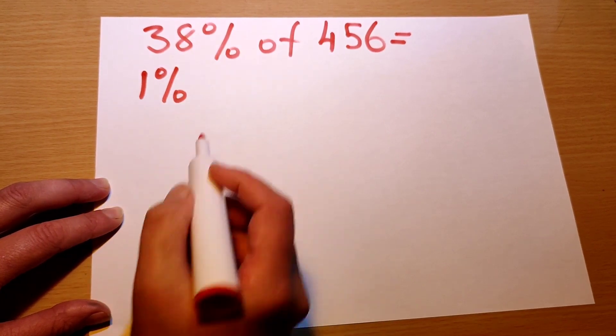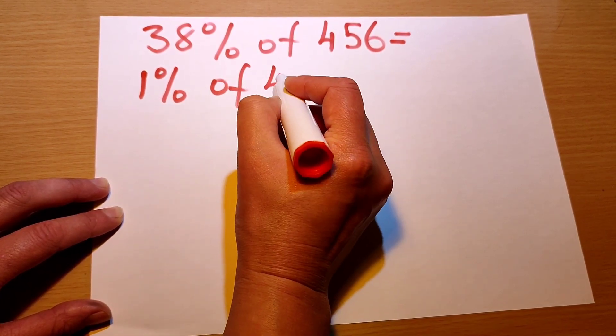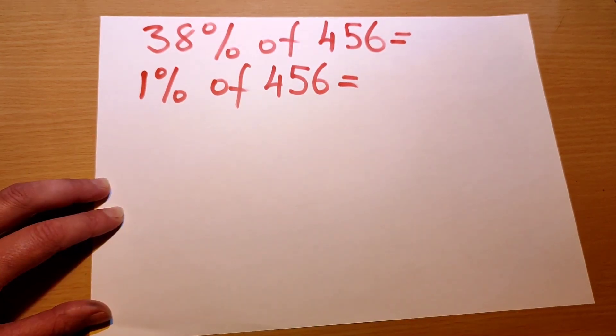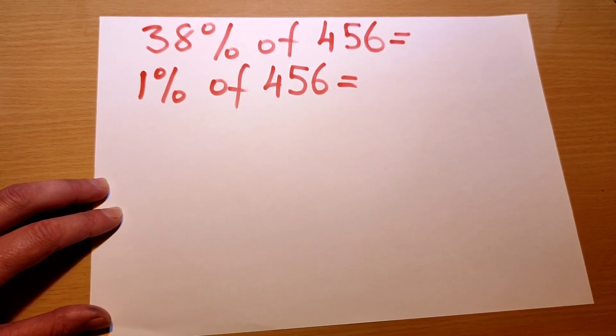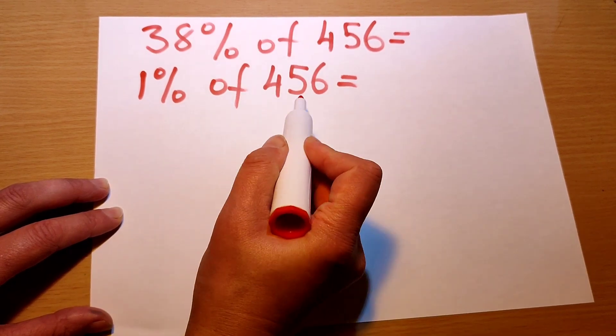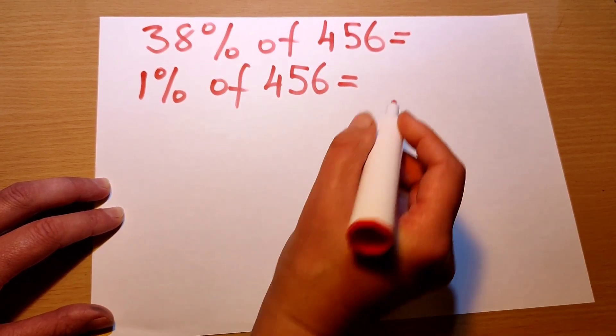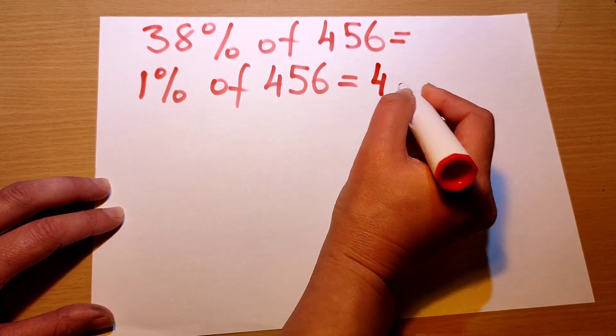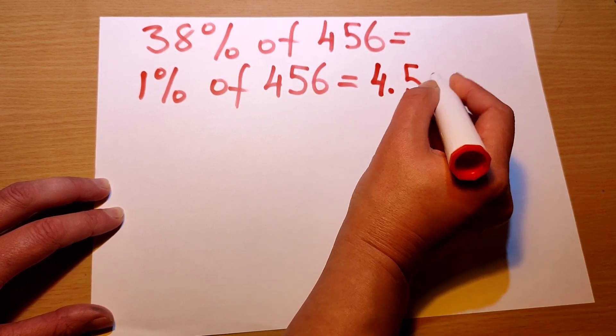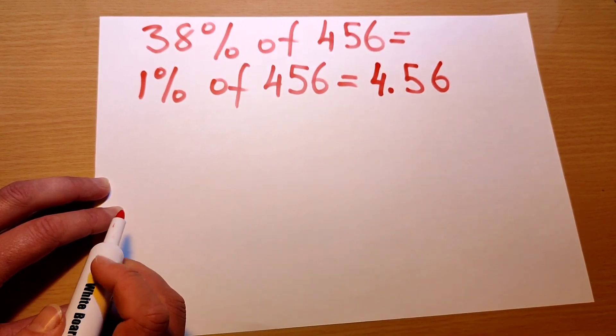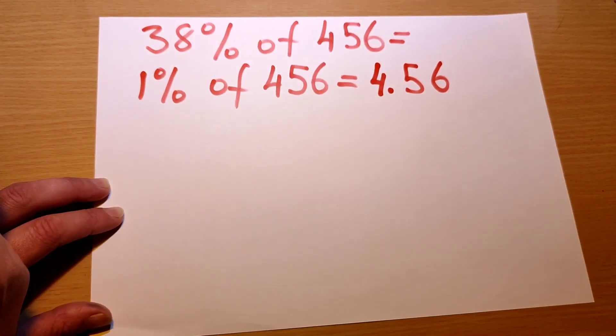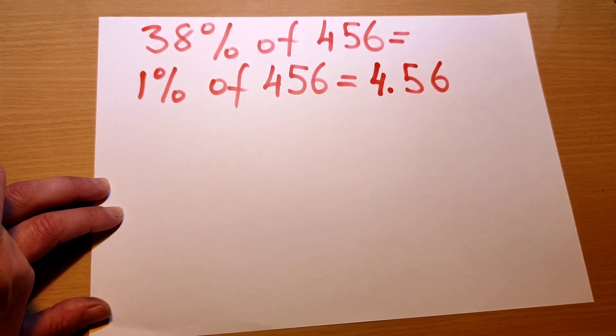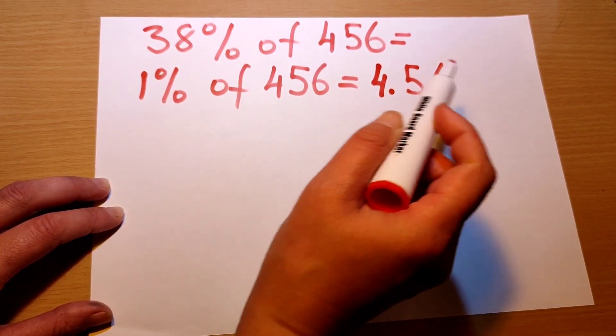To find 1% of any number, you divide that number by 100. So 456 divided by 100 is going to be 4.56.